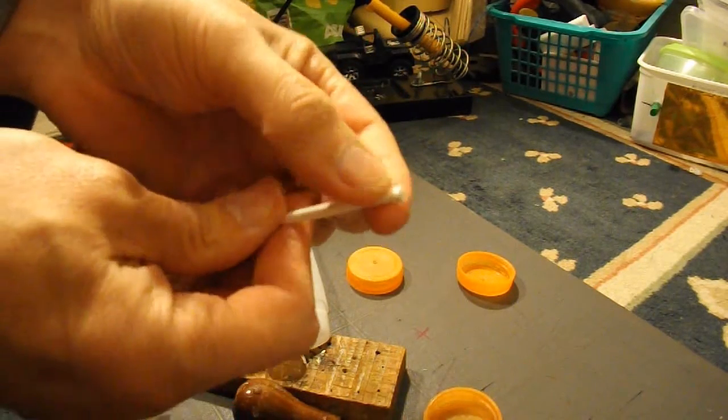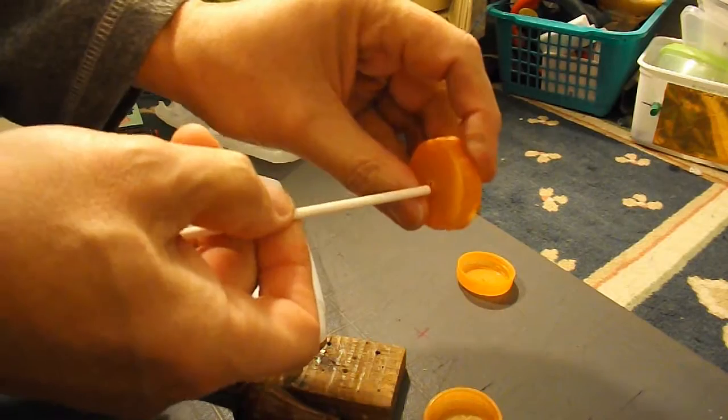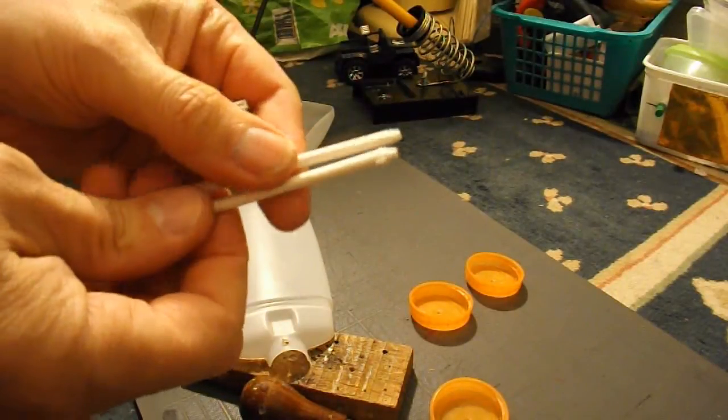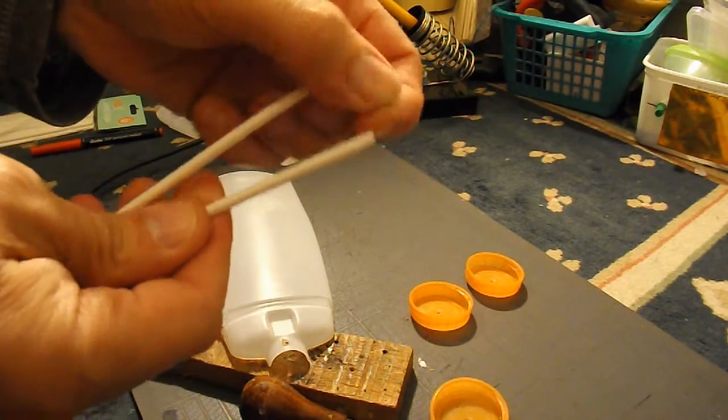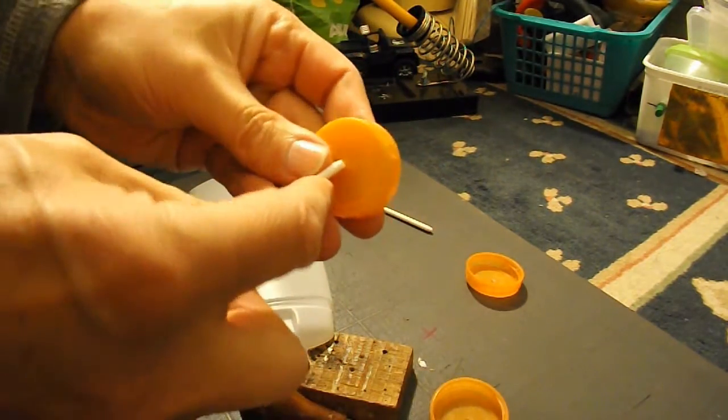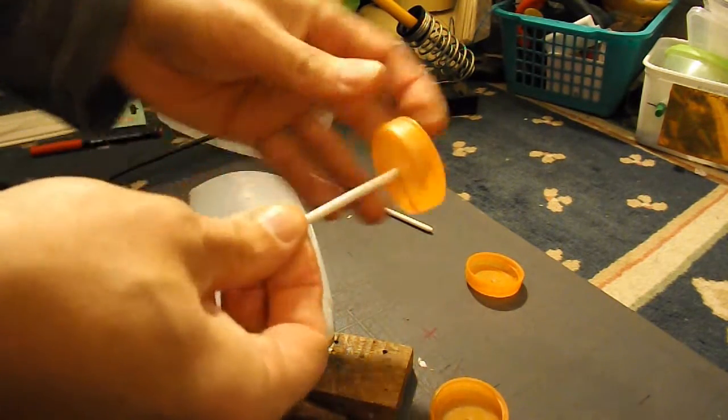I'm going to look for my pencil sharpener and I'm going to put some points on the end of this, then we can push it through the holes I've already made and it'll fit on nice and tight. There we go. I've put points on them, well not sharp points but at least they're tapered a bit.